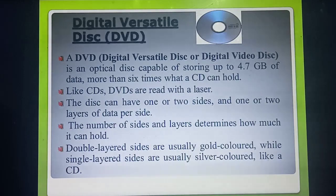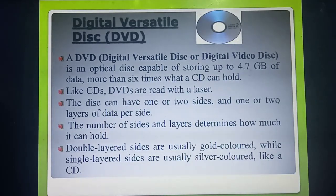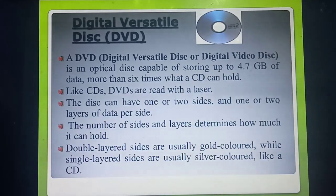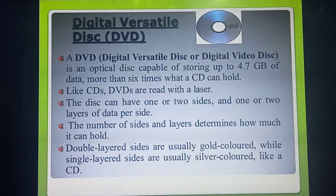So the difference from CD: DVDs — full form is digital versatile disc or digital video disc. Storage capacity is 4.7 GB, six times higher than CD. Data is read by laser beam. DVD has two sides or two layers. Based on the number of layers, you can identify the capacity. Double layered looks gold in color; single layer looks silver in color.